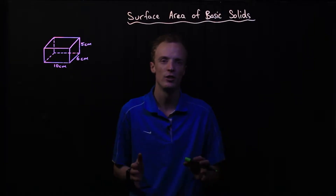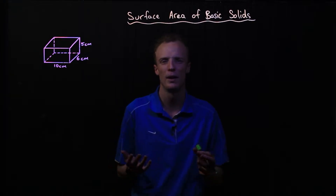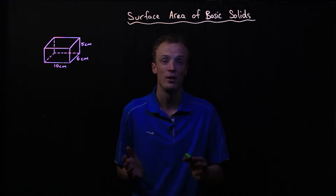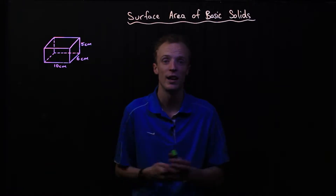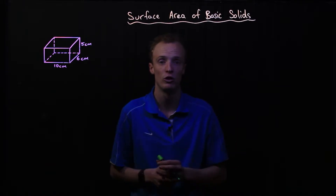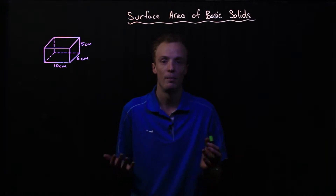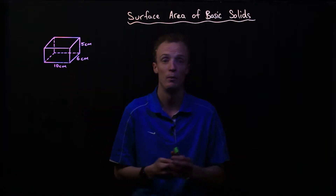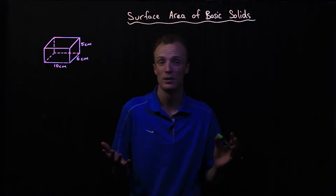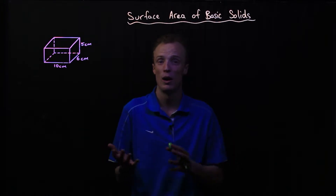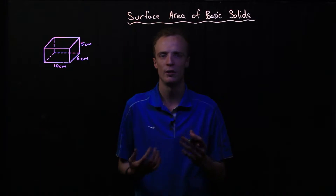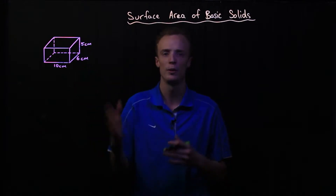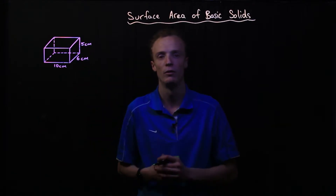Let's take a look at a strategy we can use to calculate the surface area of some basic solids. This strategy can be used with pretty much any sort of solid three-dimensional shape, whether that be a prism such as the one we've got here, a tapered solid, or a more complex shape. One strategy we can use is to create a net diagram of the shape we're trying to calculate the surface area of.